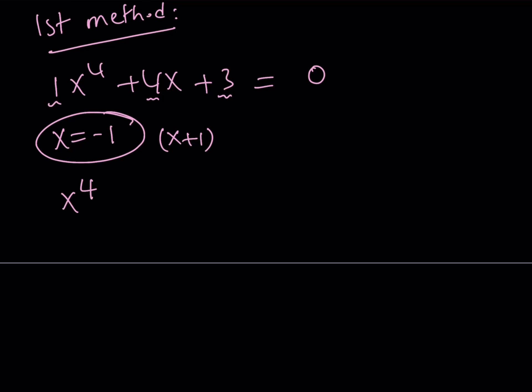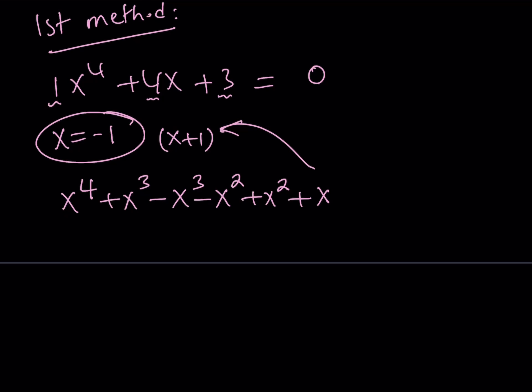I'm going to start with x to the fourth, add x cubed so that it's divisible by x plus one. But then I don't have any x cubed in the original problem, so I have to subtract it. Then I subtract x squared so that again I'm getting something divisible by x plus one, because this is minus x cubed plus x squared. I don't have an x squared in the original, so I add that. This means I have to add x because x squared plus x is divisible by x plus one. I do have 4x but only added x here, so I need to add 3x. And finally I finish with a three, which tells us everything works.